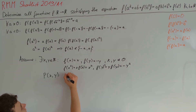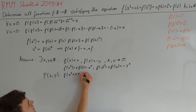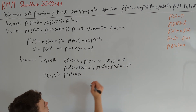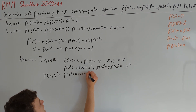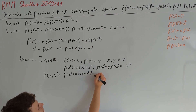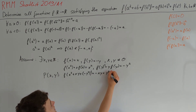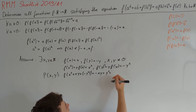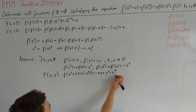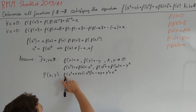Therefore P(x, y) becomes: f(x² + xy + f(y²)) = f(x² + xy − y²), and the right side equals x·f(y) + y² + f(x²) = −xy + y² + x². There are two cases for the sign of the remaining f term.